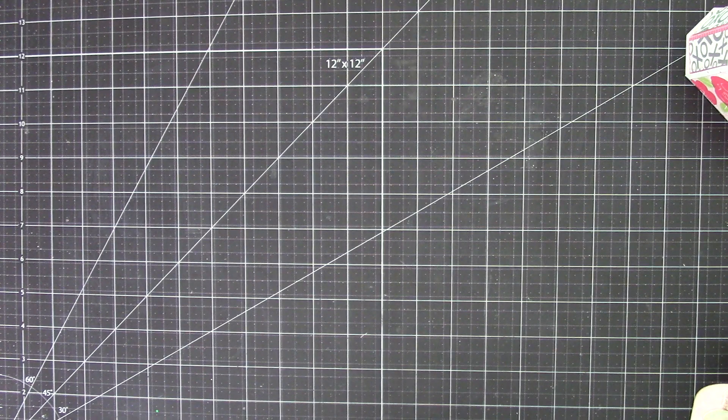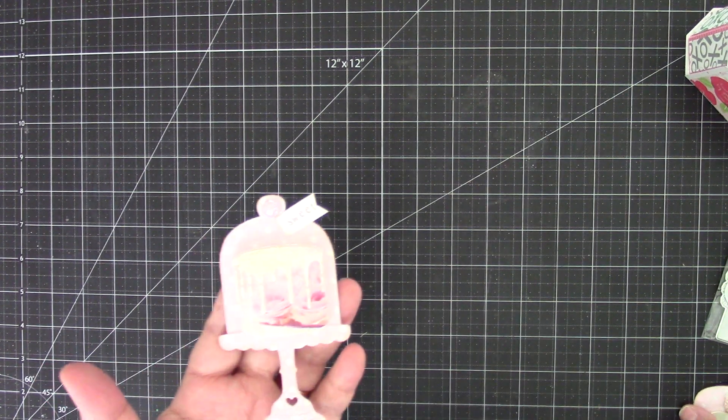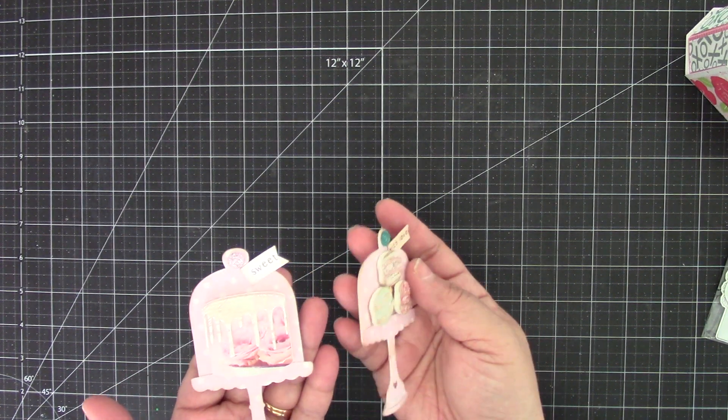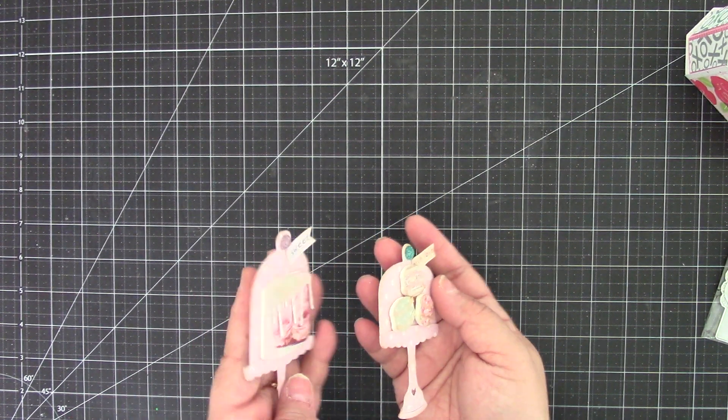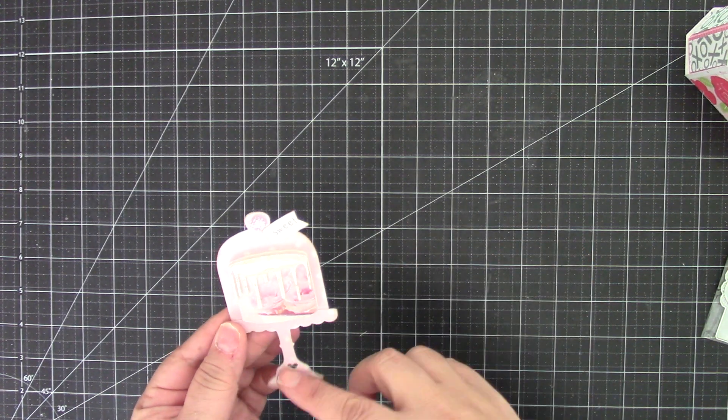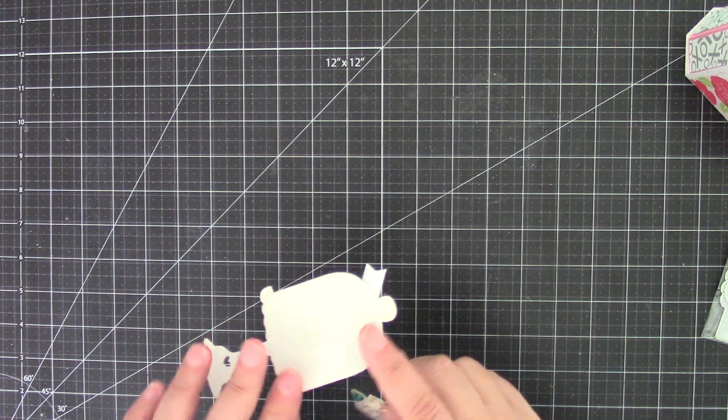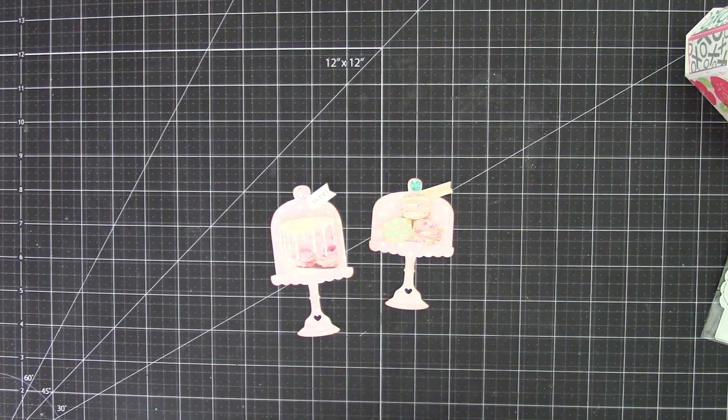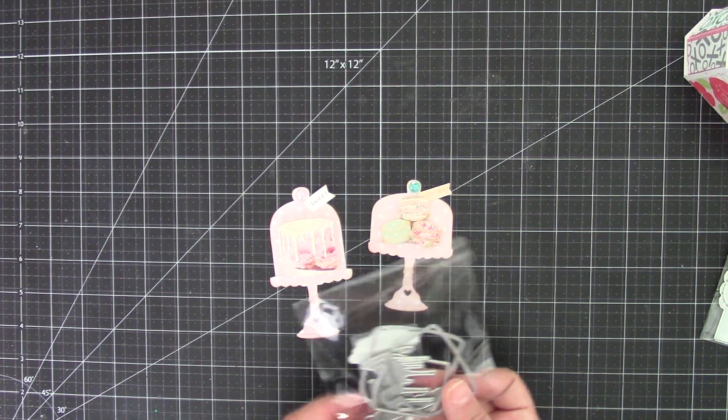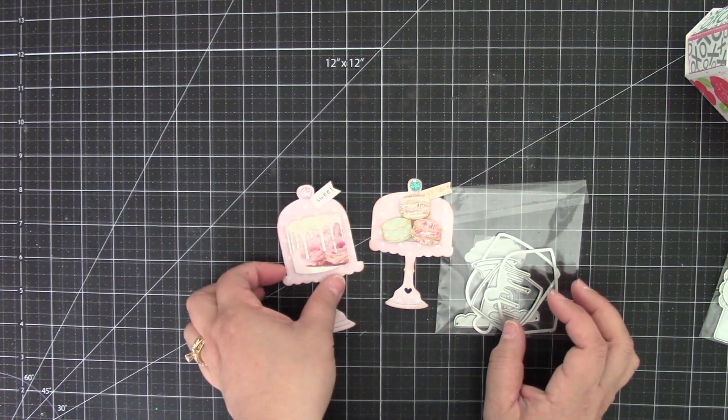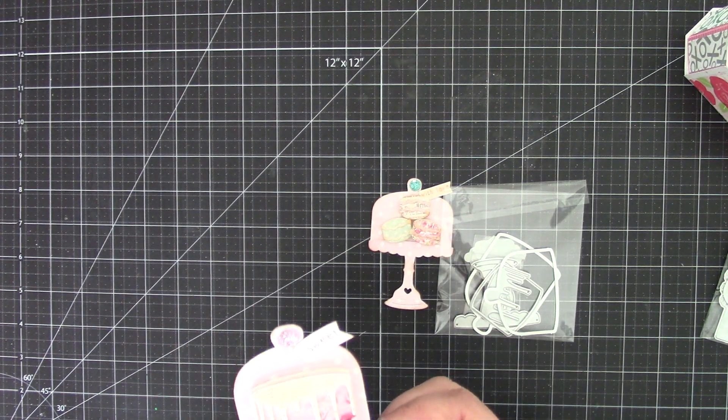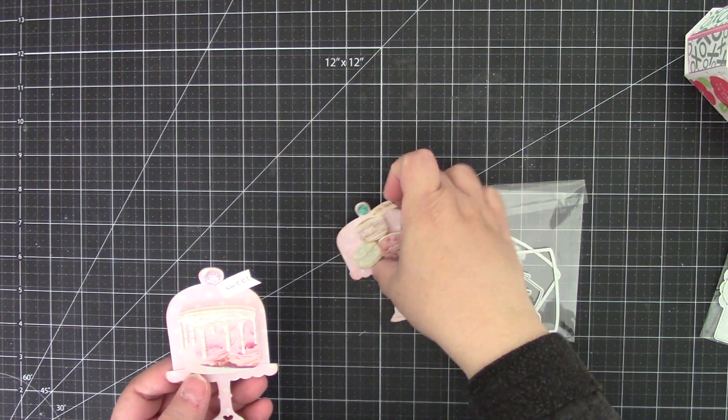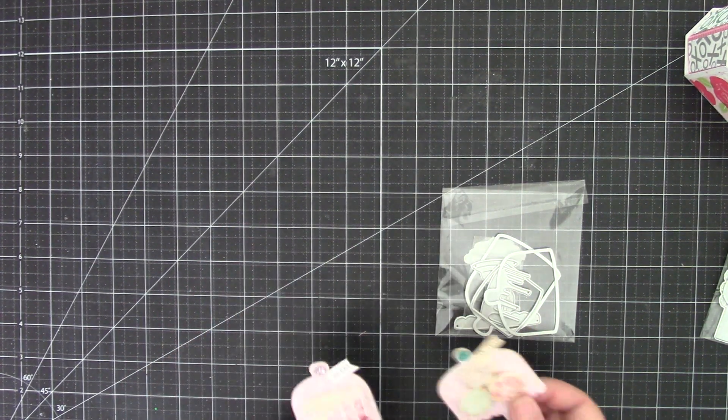And then the next one is this cake stand. This is really cute. So what I did to the cake and the macaroons, I added some foam to give it dimension. And then I just backed the cake stand with some poster board. So it's a little bit more sturdy. And that is this die right here. Get all these pieces right here. And then I added some of the glossy accent on top. Really cute die set. So there's that one.